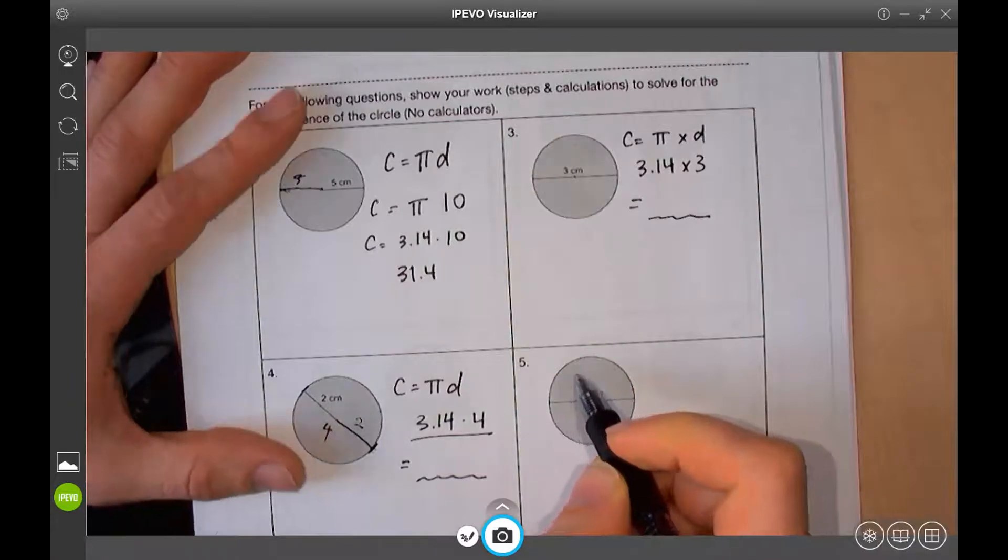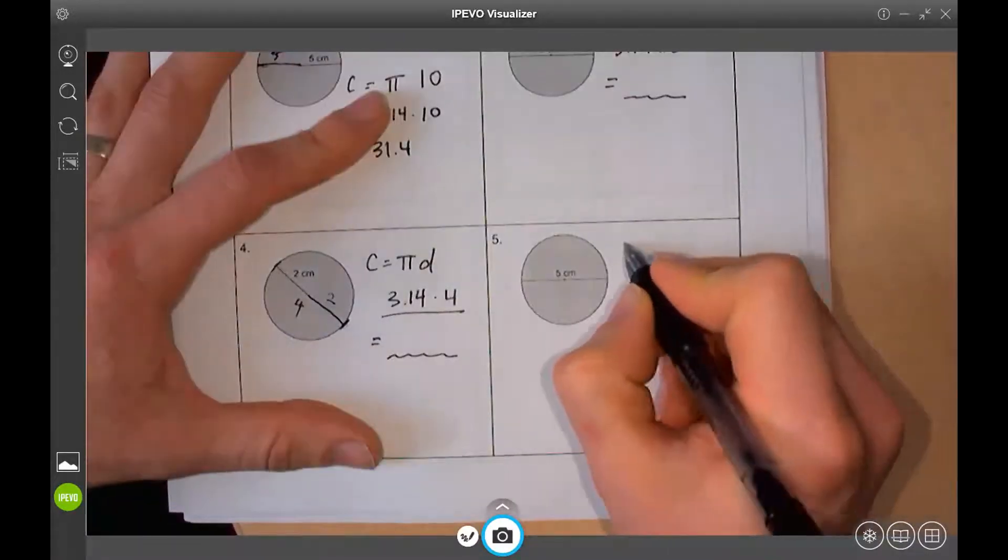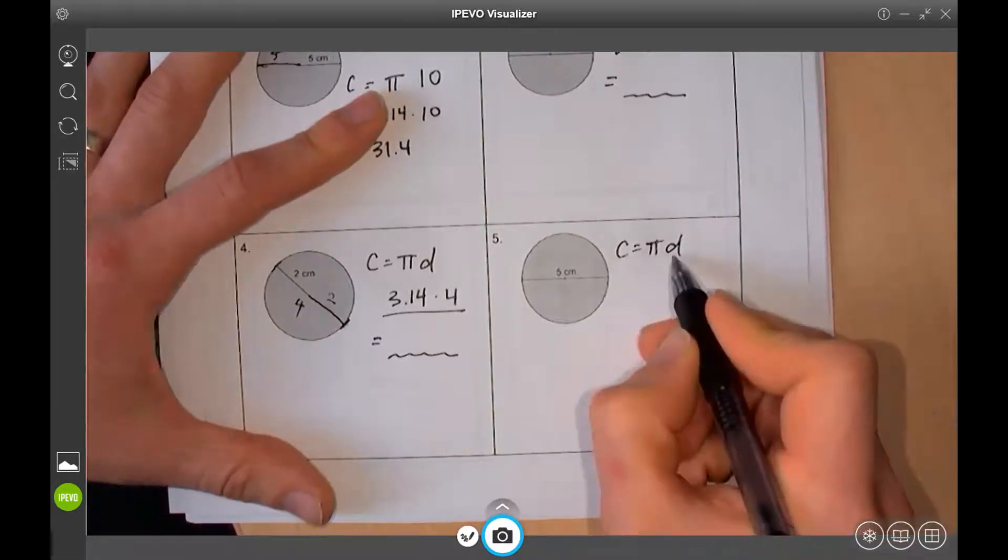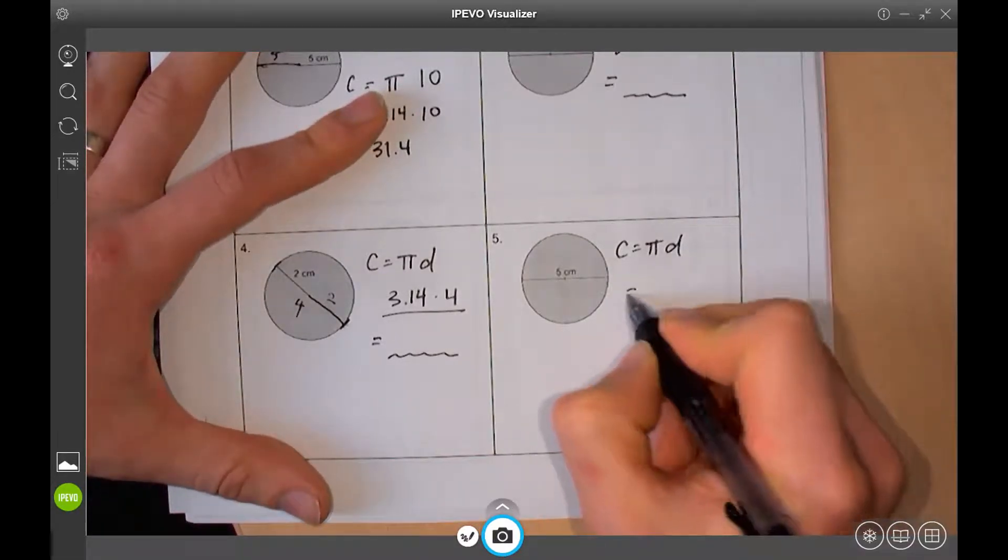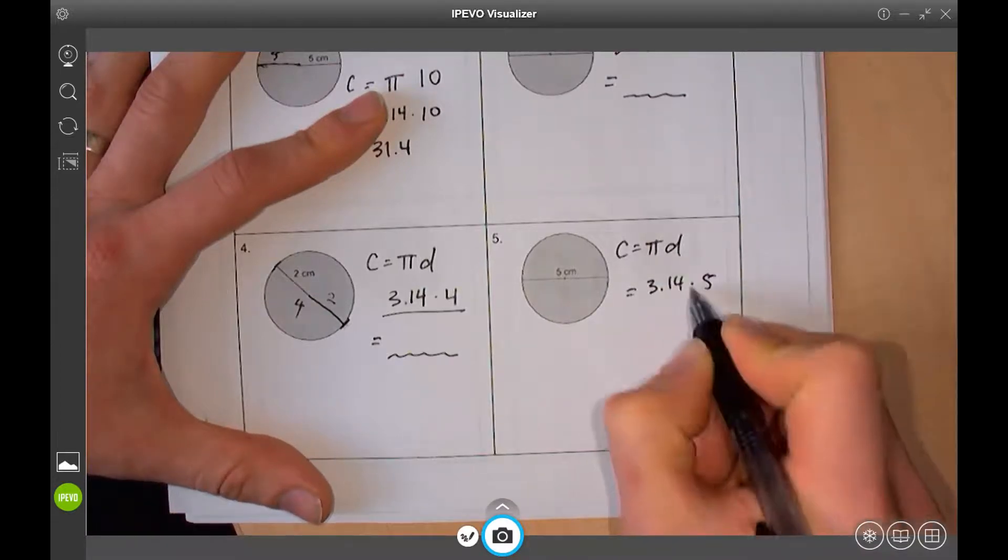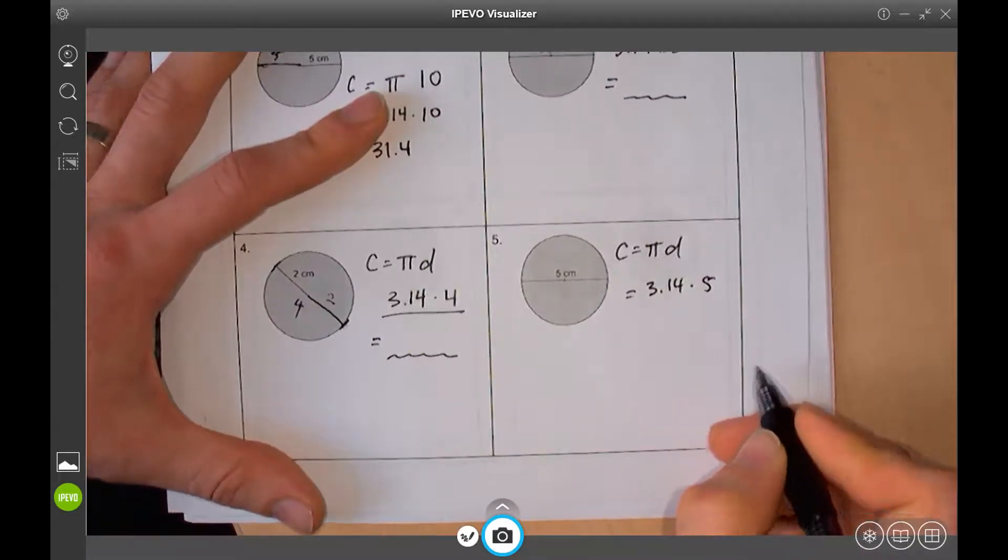Put it down. So, for these questions, they're going to go pretty quick. What I want you to do is I still want you to write down the formula every time. Pi D. So, you get used to doing it. 3.14 times 5.